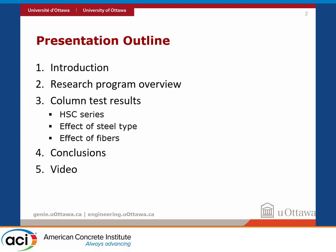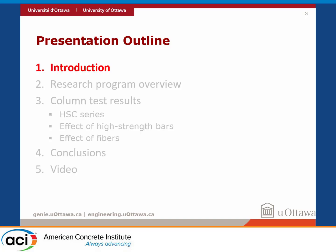Here's the presentation outline. I'm going to start with an introduction, then go over the research program overview, then go over the results step-by-step. We'll start with the HSC columns — high-strength concrete columns — then the effect of the steel type, which was one of the main parameters we investigated, and the effect of fibers. Then we'll end with conclusions and a video.